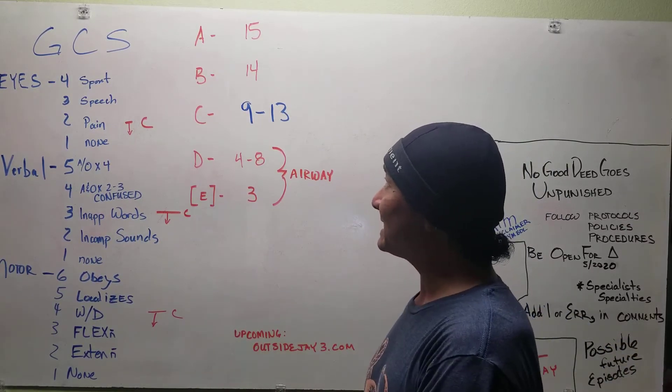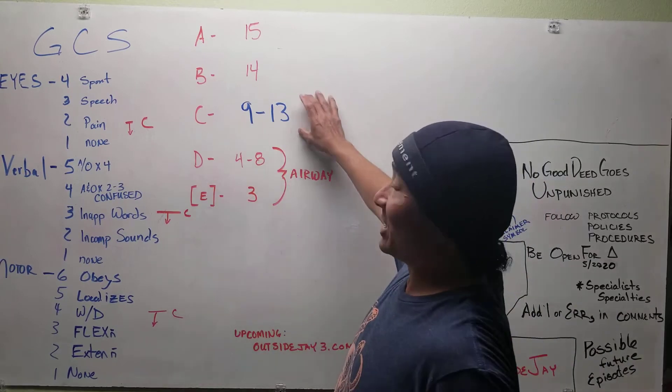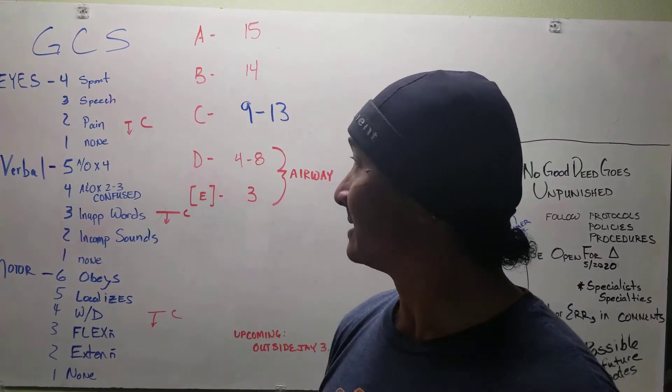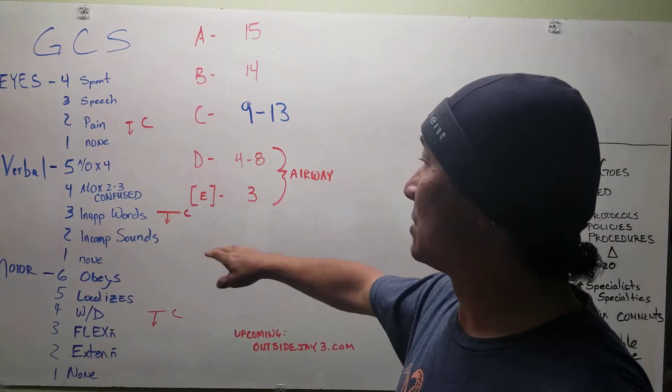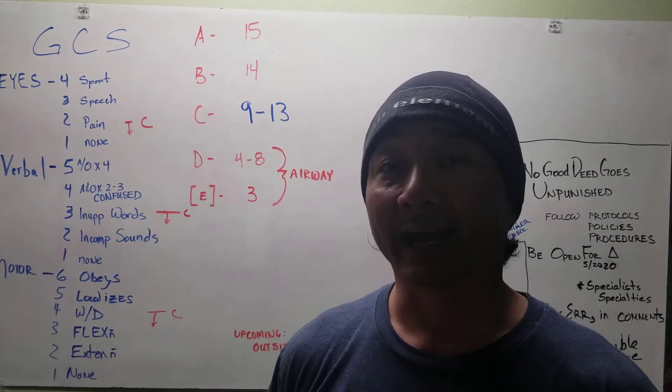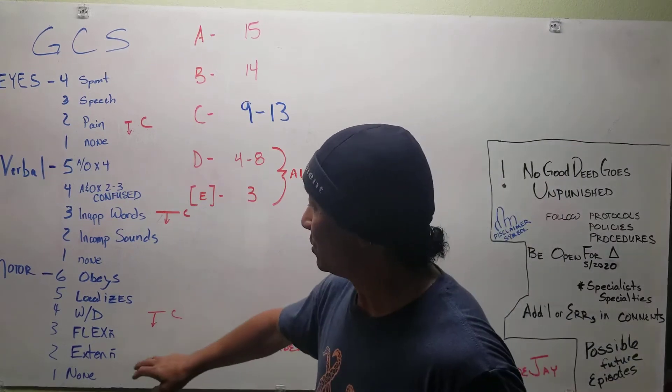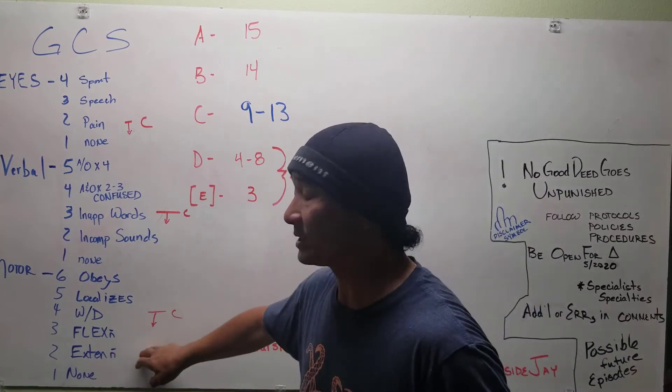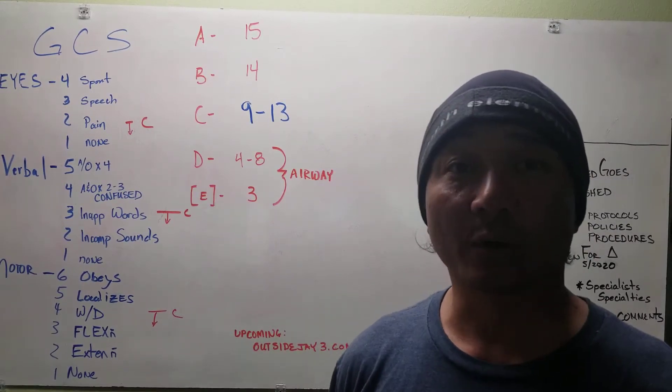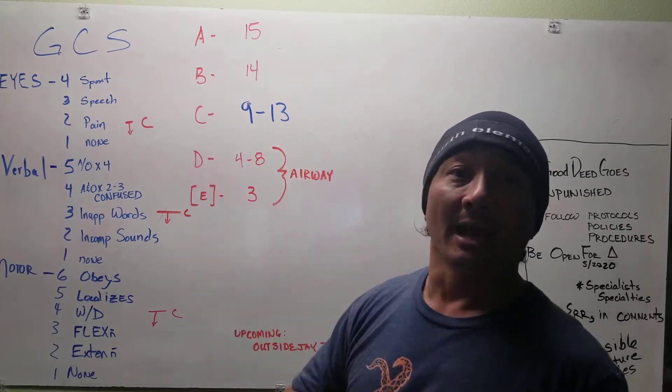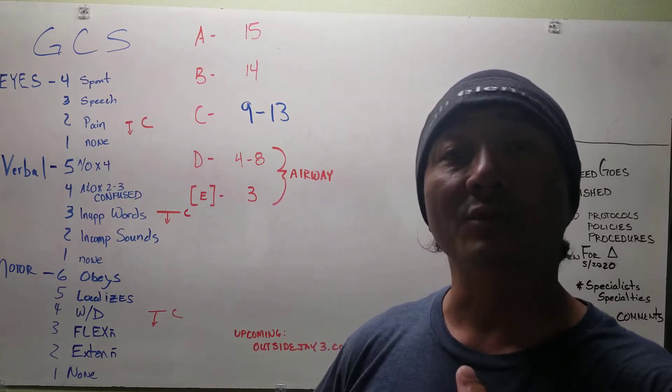That only leaves us with GCS of nine to thirteen. That's the strange range. That's the range that I want to take care about. And this is also the reason why I don't really care if you're having inappropriate words or incomprehensible sounds. If you're mumbling, I can't tell whether you're trying to make a word or a sound. It doesn't really matter. It's going to keep me in that nine to thirteen range. If you are flexion withdrawal or extension withdrawal to painful stimuli, I'm trying to figure out in the back of the medic whether you're a two or a three for motor commands.